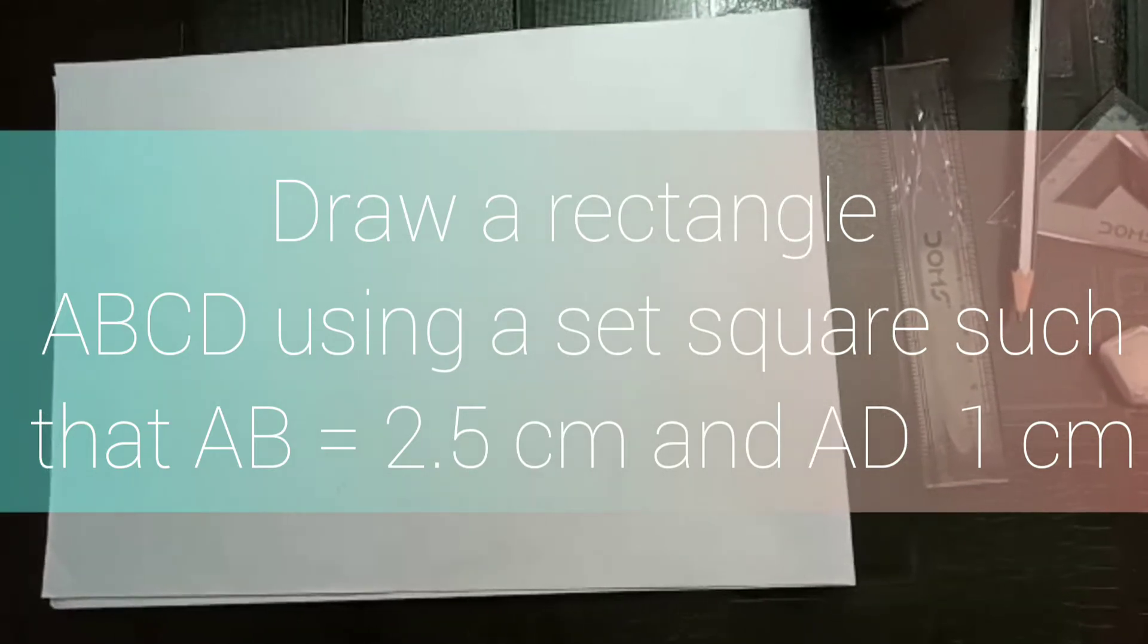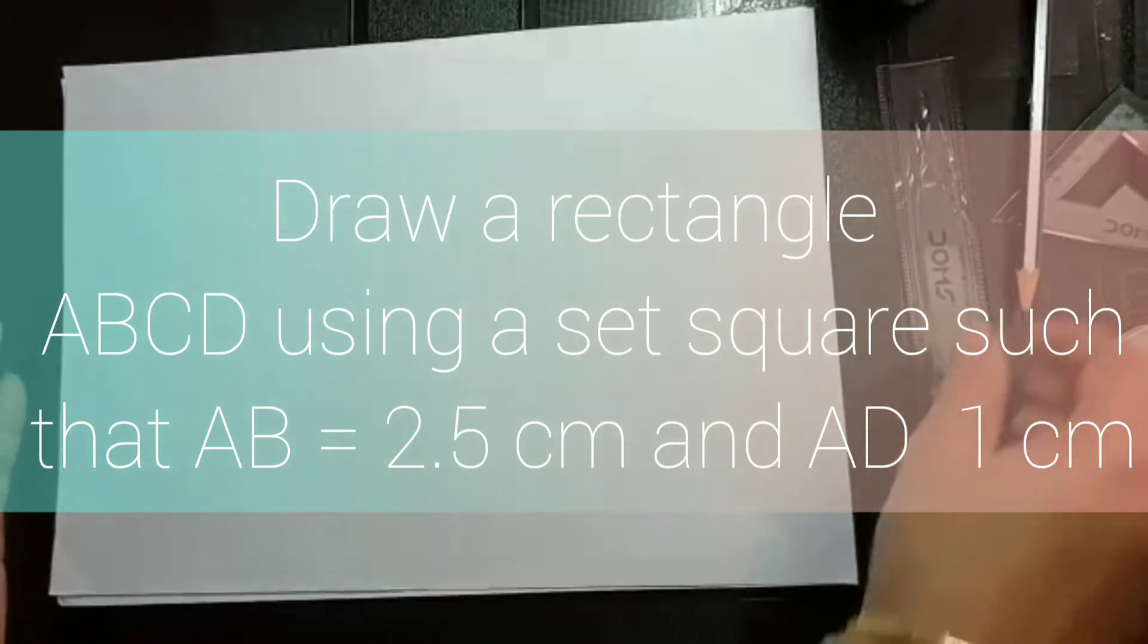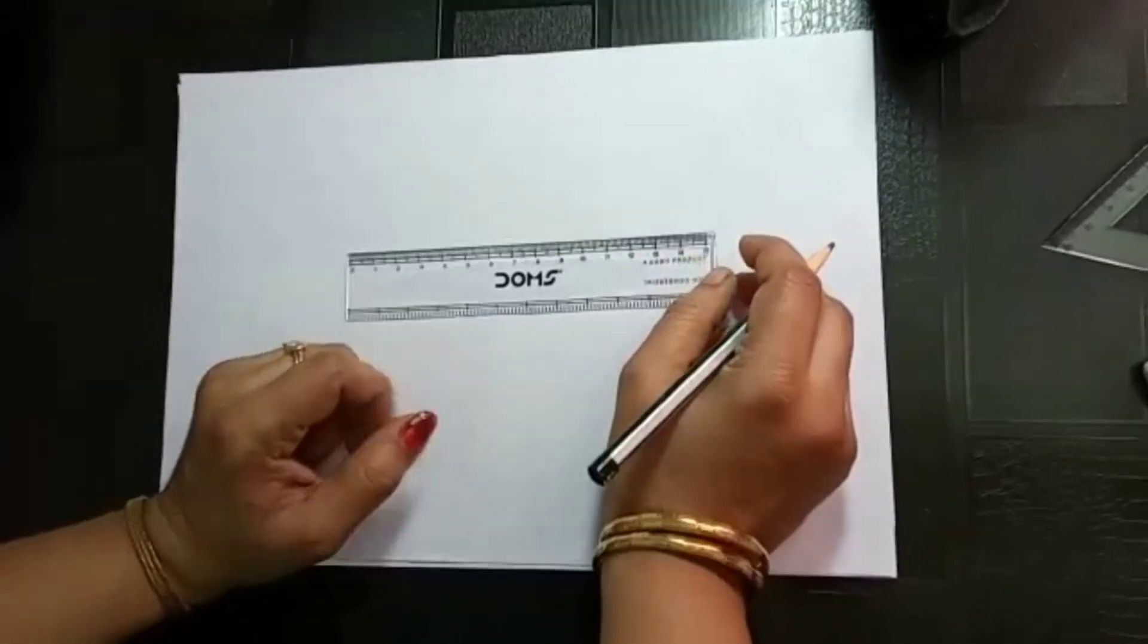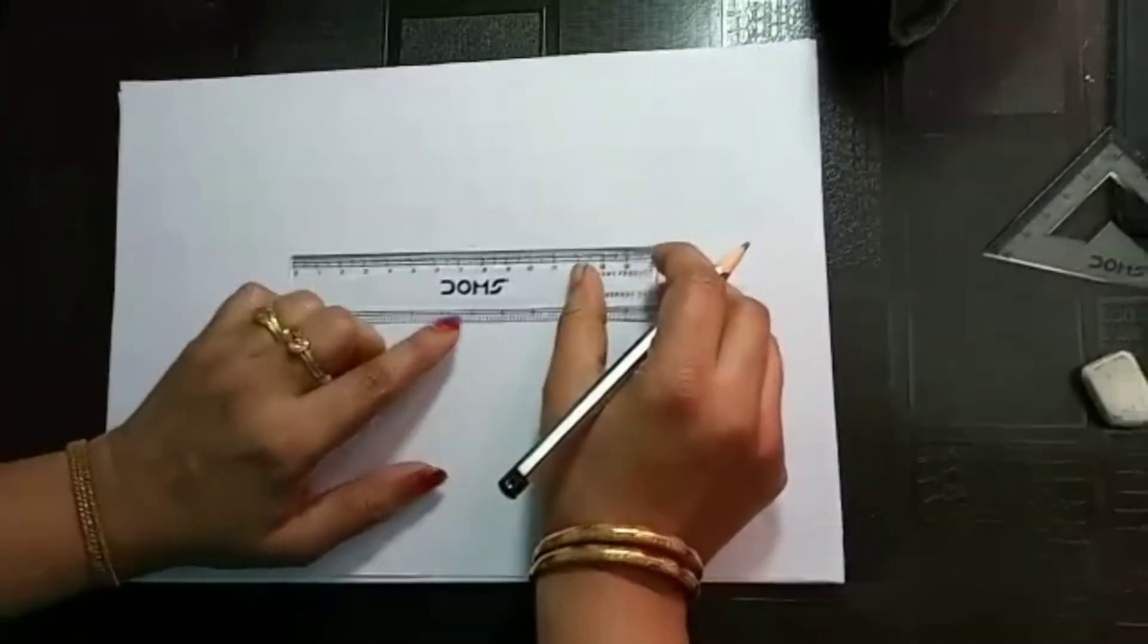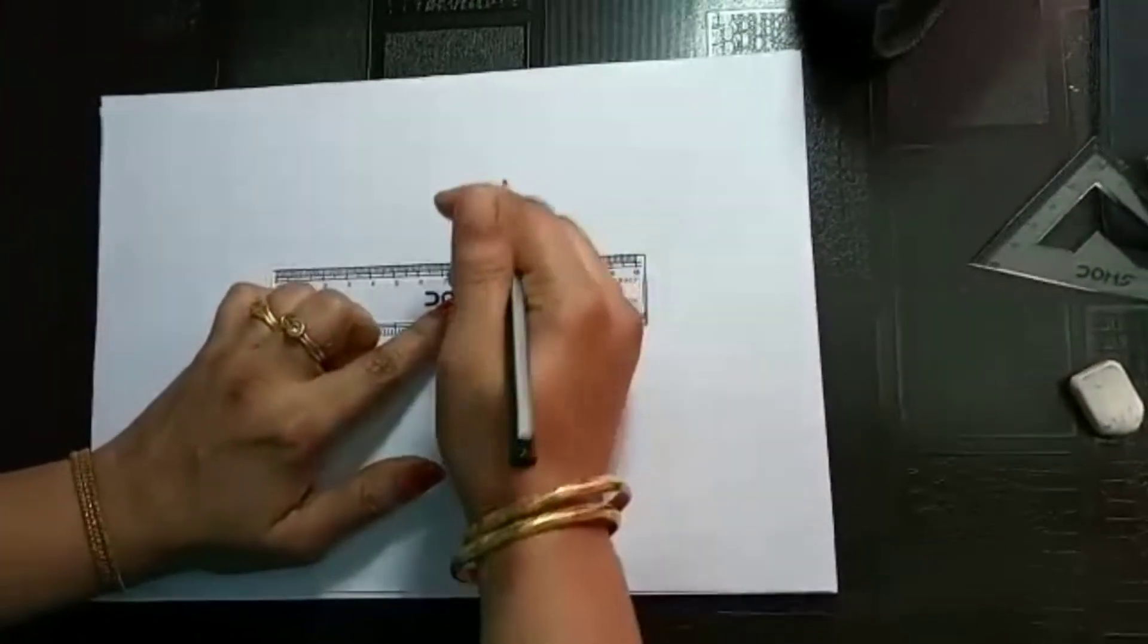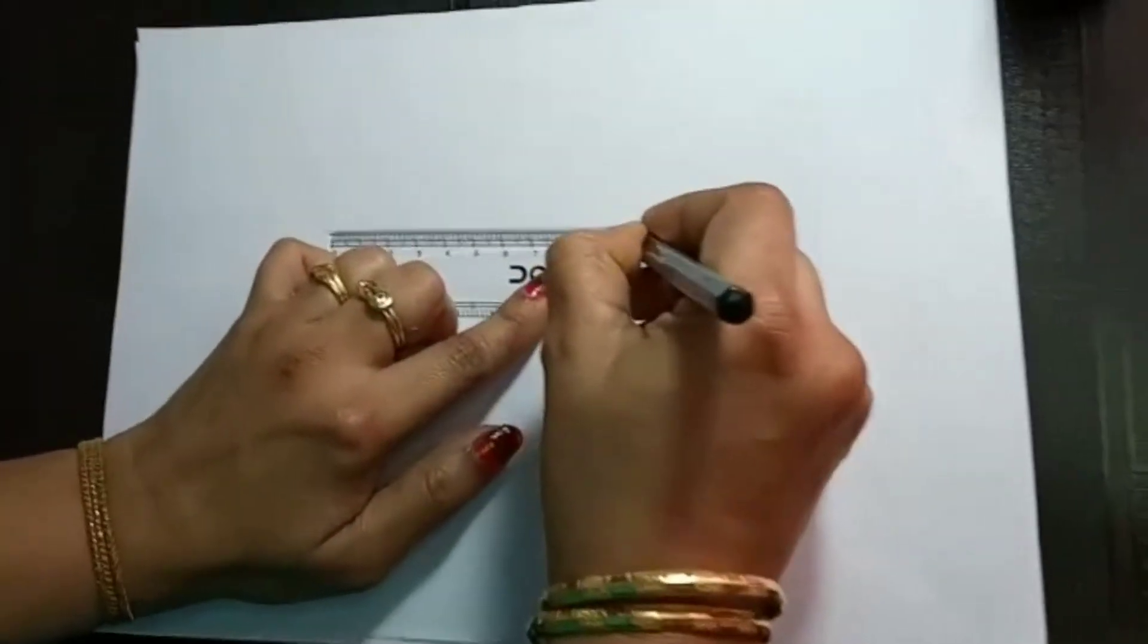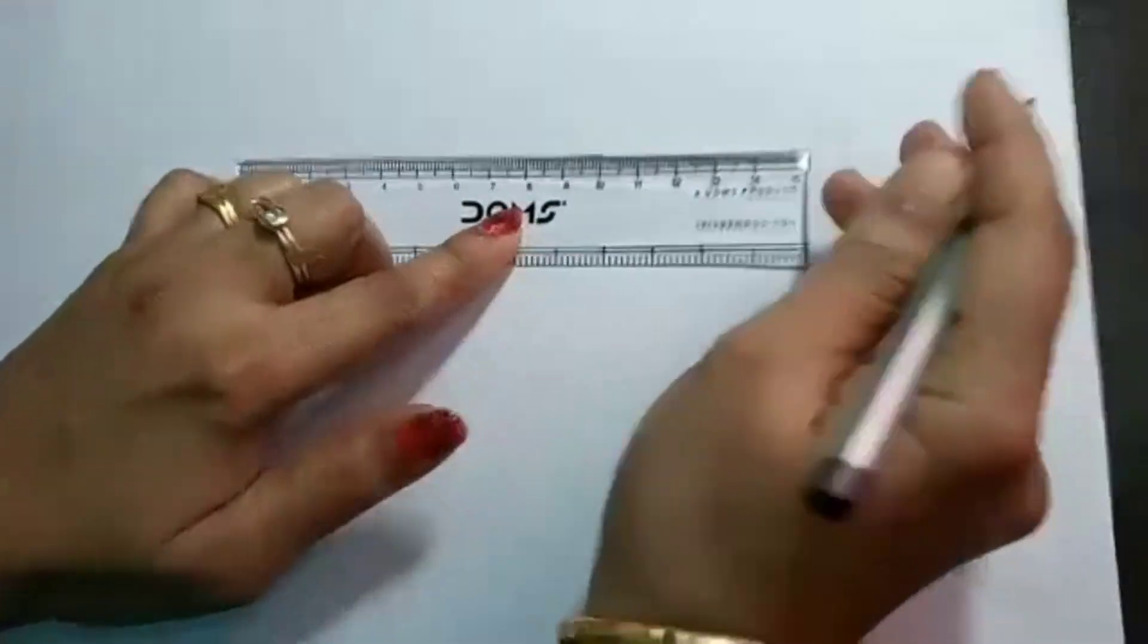So here we have to draw a line segment at first. This line segment can be of any length, doesn't matter. So here I am going to draw a 10 cm line. So for that, 0 to 10 I just connected and made the line.